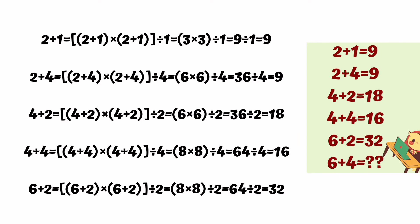We will solve 2 plus 1. 3 into 3 is 9, divide by 1, the answer will be 9. Second row, 2 plus 4. Now you can see 6 into 6 divided by 4 equals 9.